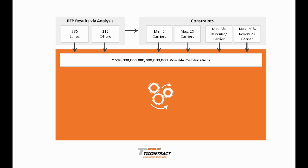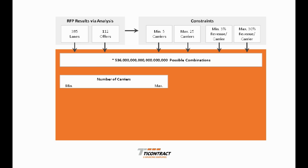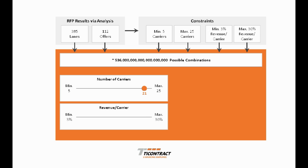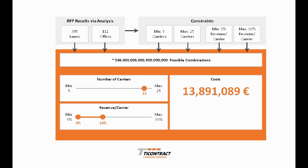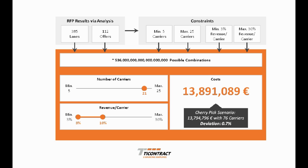But the amazing T-Contract combinatorial solver is able to deliver a result with 21 carriers, where each carrier is in a revenue range between 3% and 10%, in almost no time. The total package cost is 13.9 million euros, which is deviating only 0.7% from the best-priced cherry-pick scenario with 76 carriers. A pretty perfect result in our eyes.